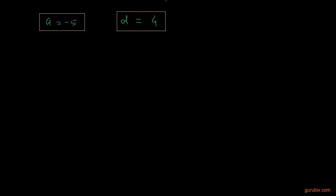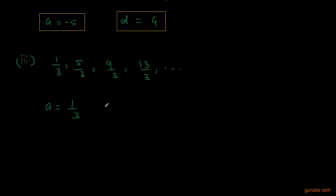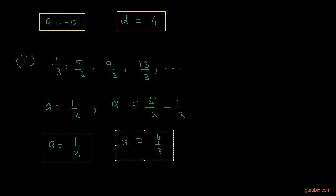Now moving to the third part, we are given the AP: 1/3, 5/3, 9/3, and 13/3. The first term is 1/3. We find the common difference by subtracting the first term from the second one. The second term is 5/3 and the first term is 1/3, so we get 4/3. Therefore, the first term a is 1/3 and the common difference is 4/3.